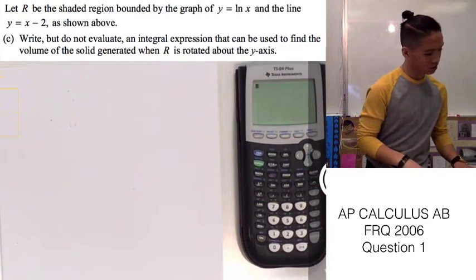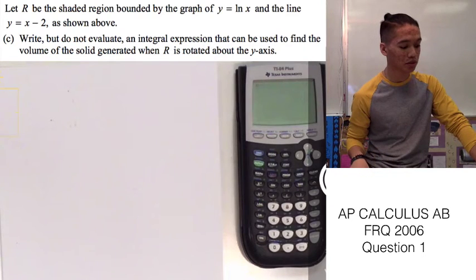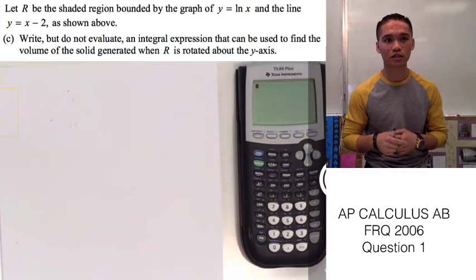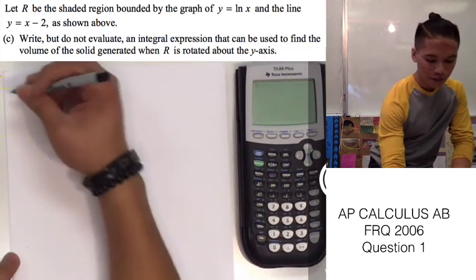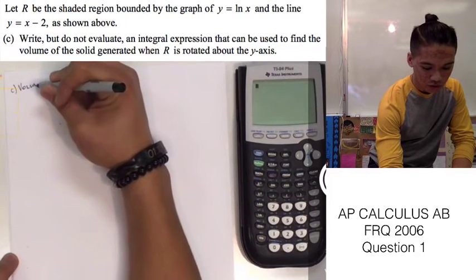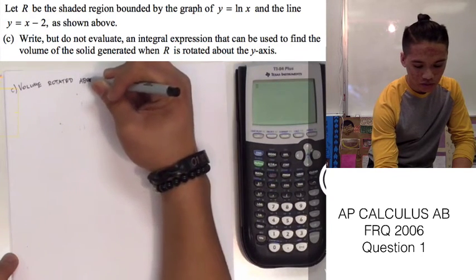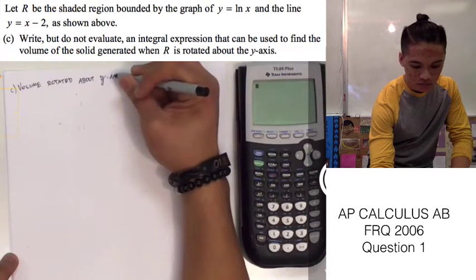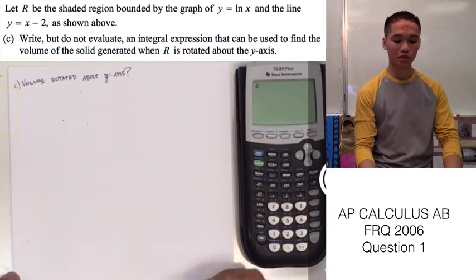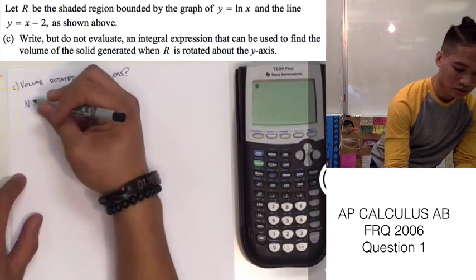Alright, let's move on to part C. Part C says: write but do not evaluate an integral expression that can be used to find the volume of the solid generated when R is rotated about the y-axis. Now we're going to have to change our functions in terms of y instead of in terms of x. The first thing we need to do is adjust our limits since it's now in terms of y.